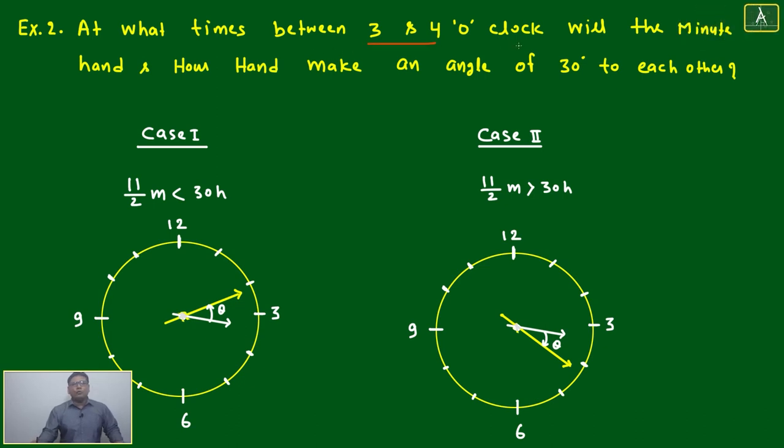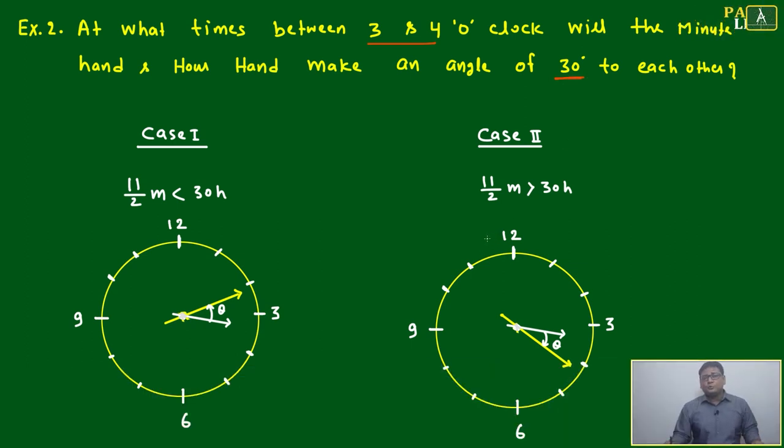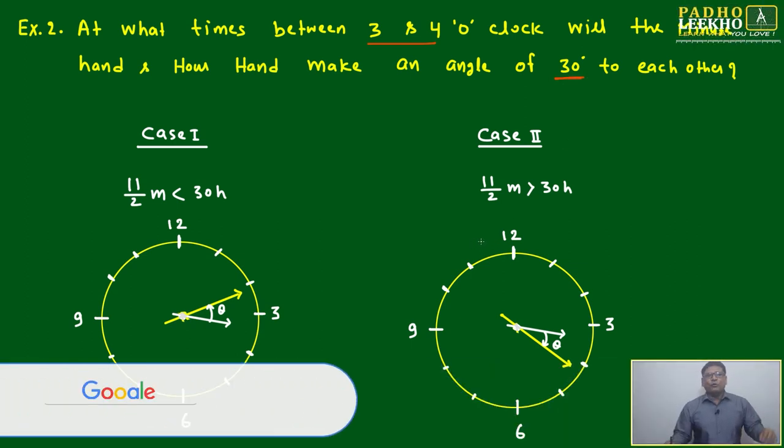At what time between 3 and 4 o'clock will the minute hand and hour hand make an angle of 30 degrees to each other? Now, you have both possibilities. We have to look because between 3 and 4, 30 degrees they will make two times. One is this way, another is this way.